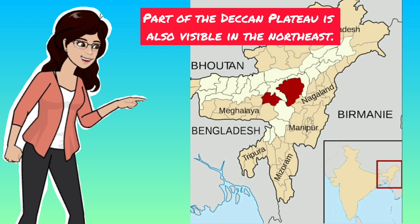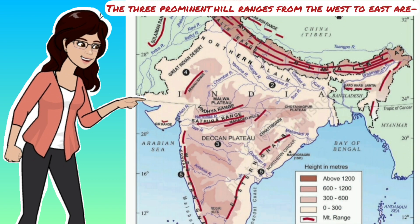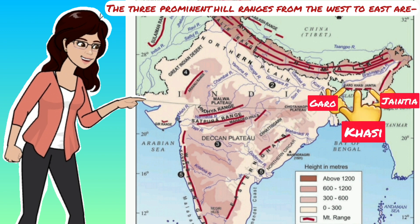Part of the Deccan Plateau is also visible in the North East. They are known as Meghalaya, Karbi Anglong Plateau and North Kachar Hills. If you move a little further you can find three prominent hill ranges from West to East: the Garo, the Khasi and the Jaintia Hills.